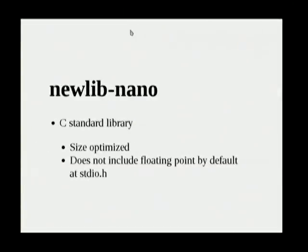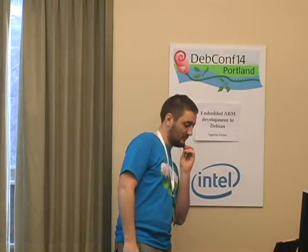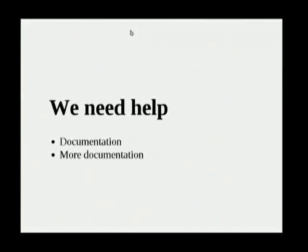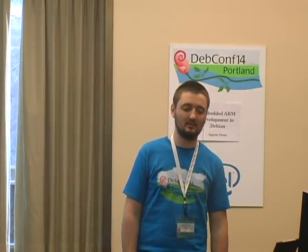The C library is newlib, which I am uploading to devconf. It tries to reduce the footprint of the C standard library — it is optimized in size and does not include floating point by default at standard output. If you have any suggestions or comments, please share — we need some help. I would like to have a how-to for starting a project from scratch, and anything else you consider necessary.